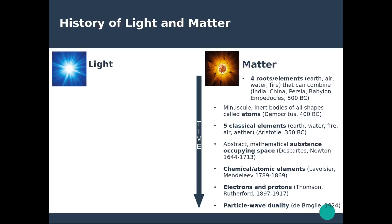It took about 100 years for another Greek philosopher, Democritus, to introduce the concept of atoms, which he defined as inert bodies of all shapes. For Democritus, there were an infinite number of atoms and this was the simplest building block forming matter. At the same time, Aristotle came back to the definition of classical elements but introduced a fifth one, which was ether.